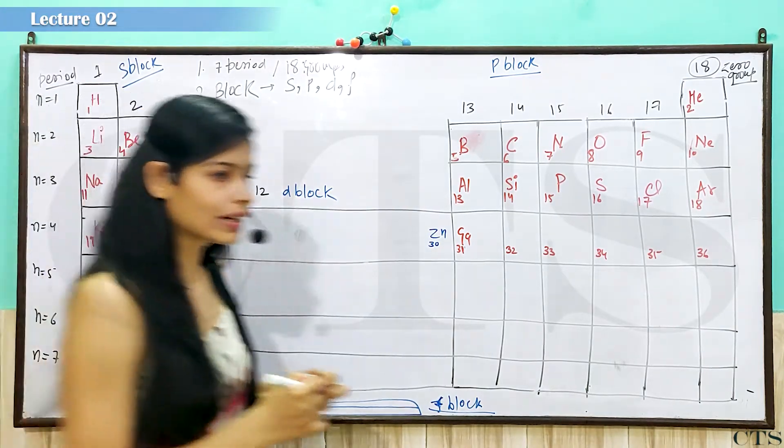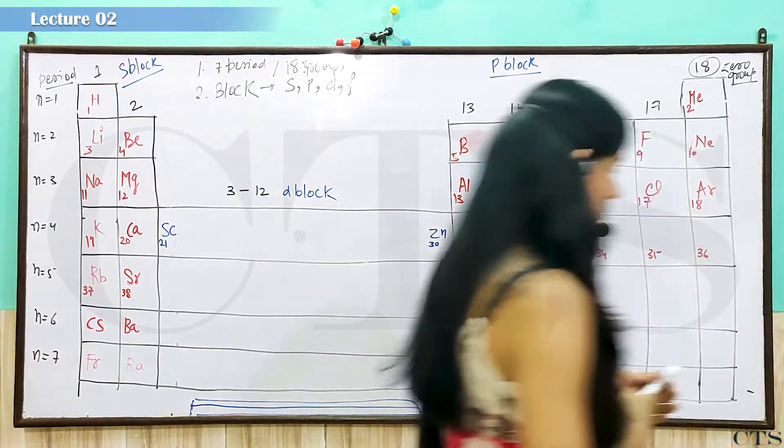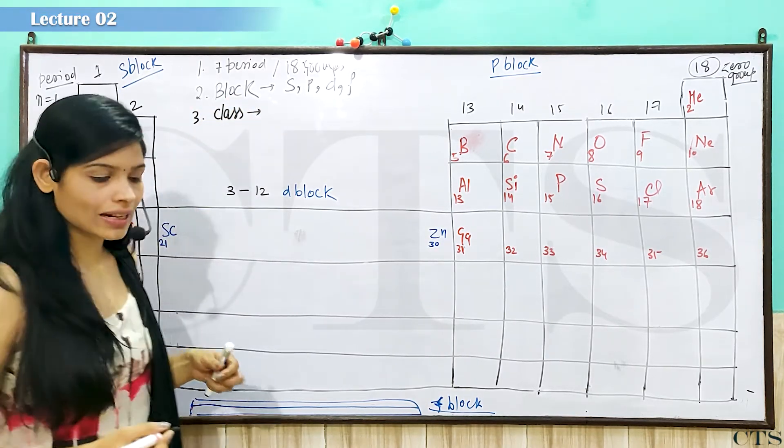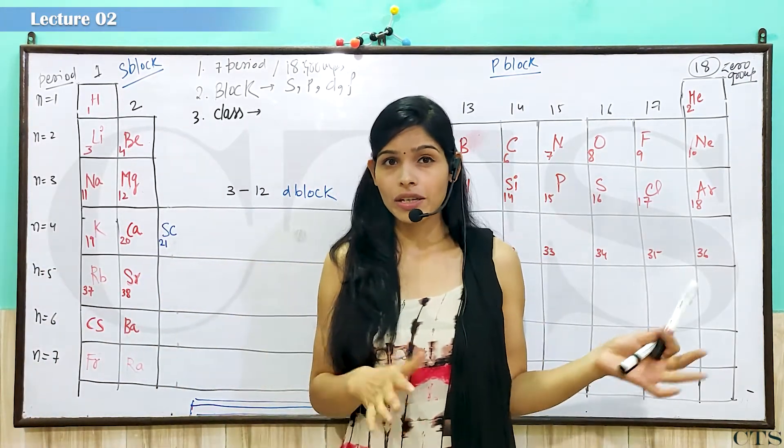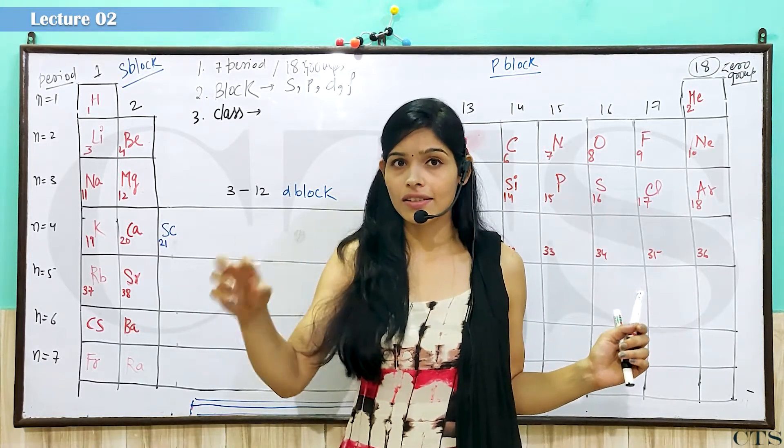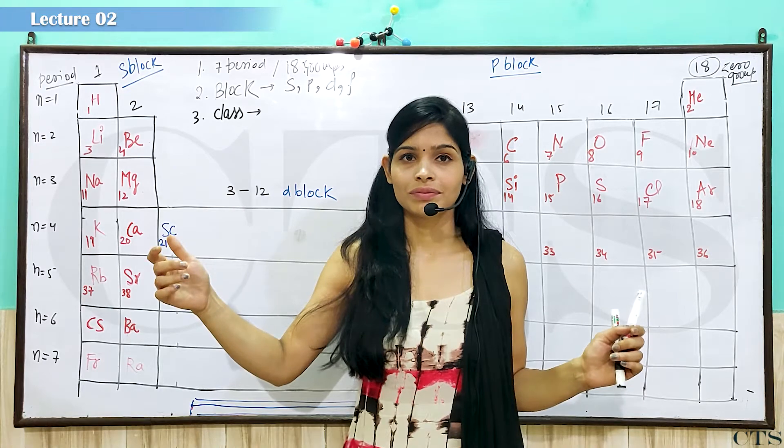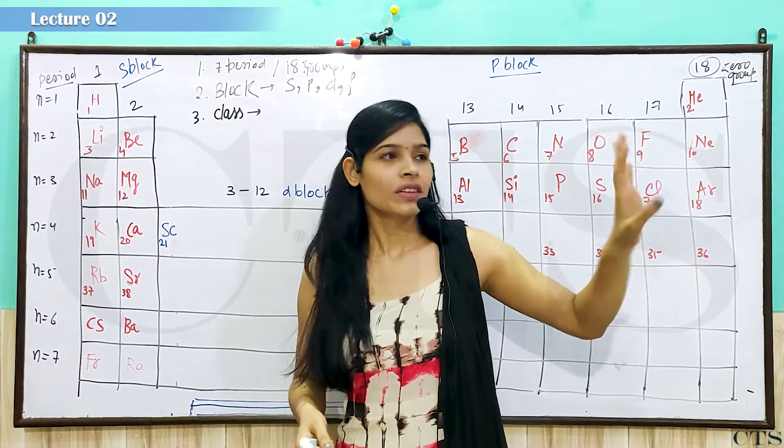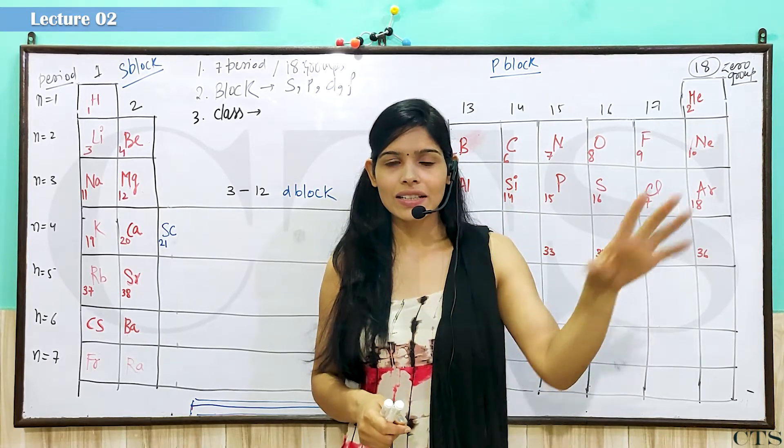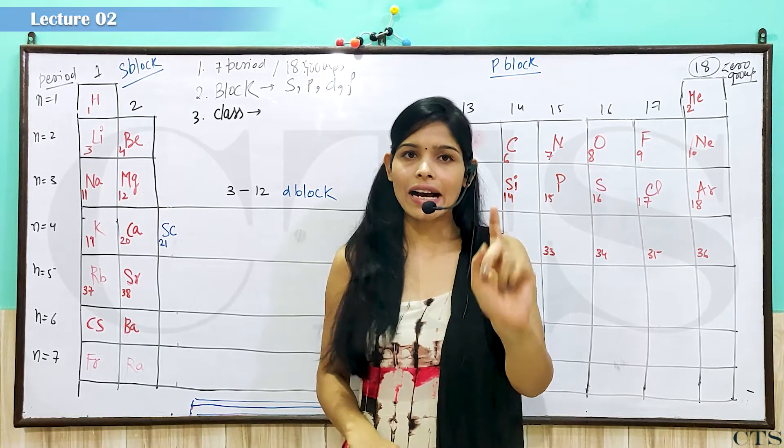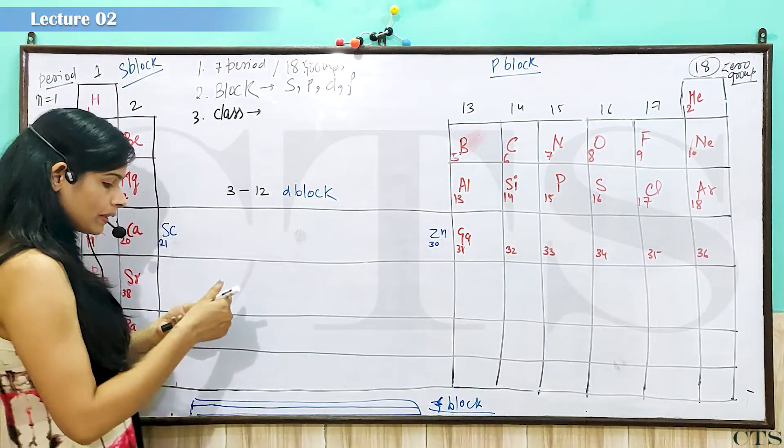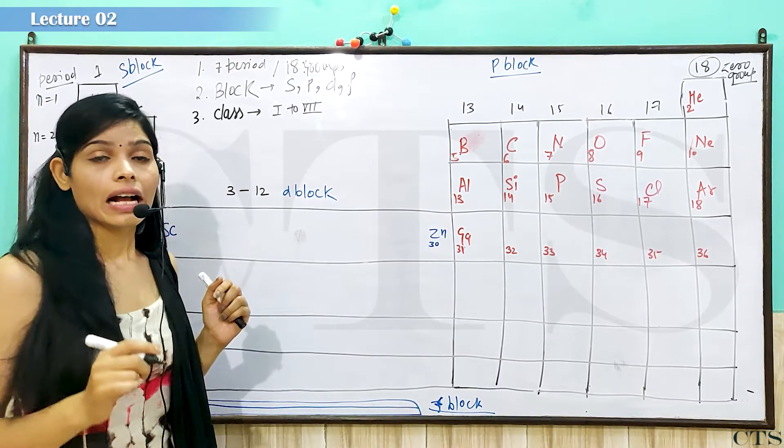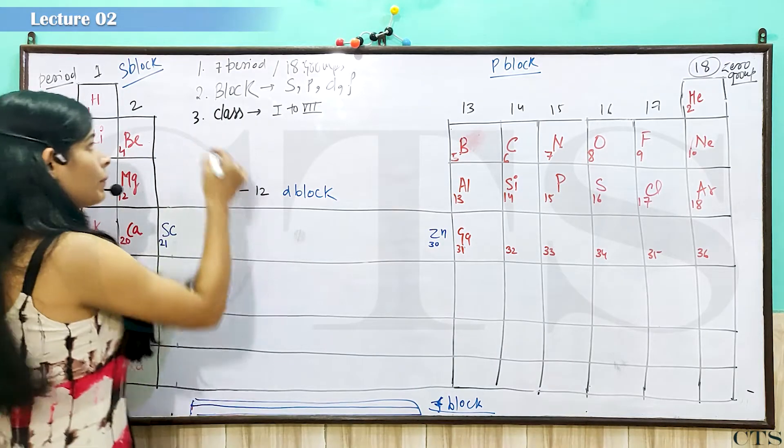Abh dhekhi ga block me divide karne ke baad me, unhne laga ki nai, aaghe aur bhi division hona chahiye. To unhohne kya kiya, unhohne beta ji, unhohne class me divide kiya. Class unhohne kyaise rakhi beta ji first class, second class, third class aasya hota hai nai. Abh LKG, UKG, itna toh maja ho, kaha se first se start kereta hai. First, second, third, fourth, fifth, sixth, seventh, eighth, art ta ki hai classes.